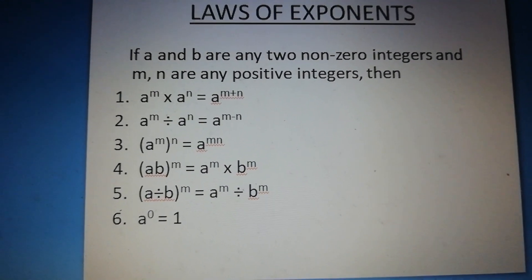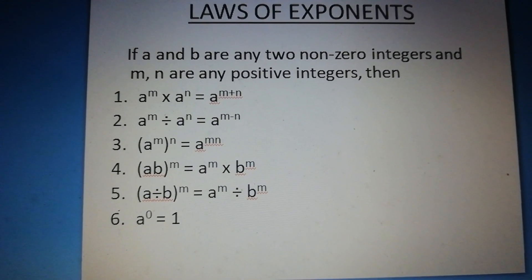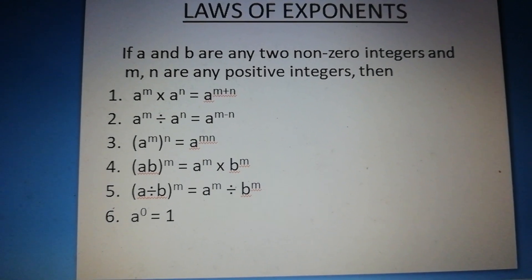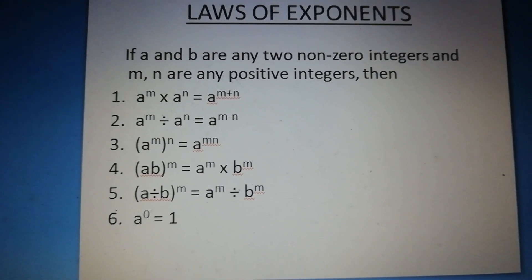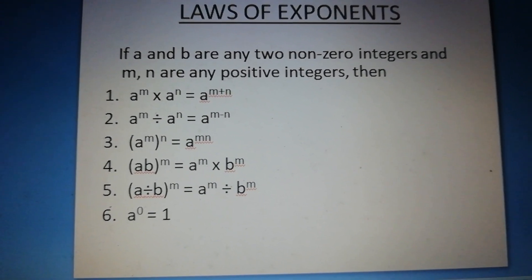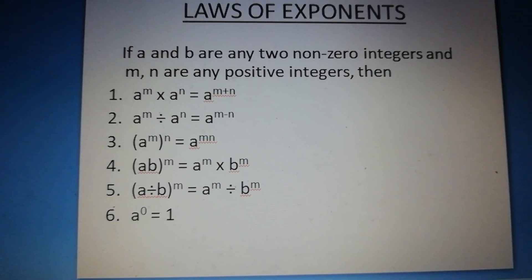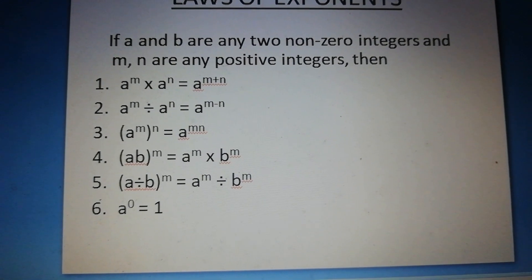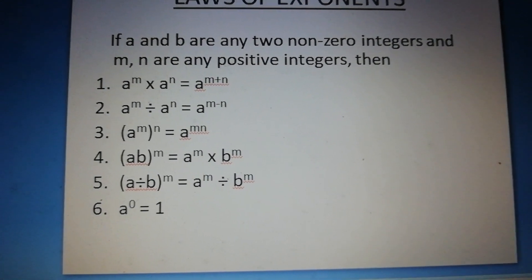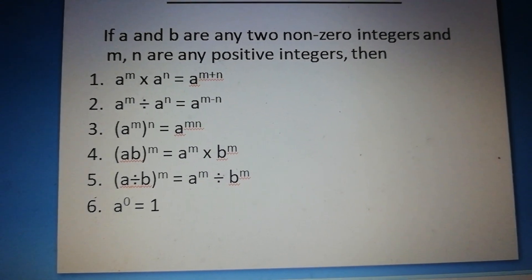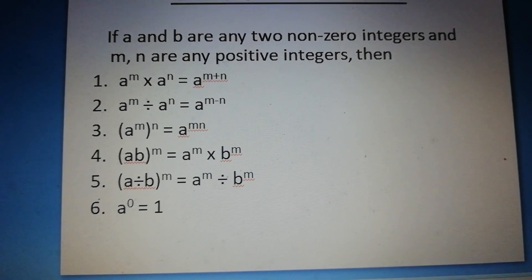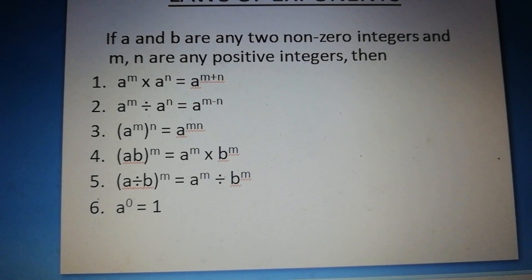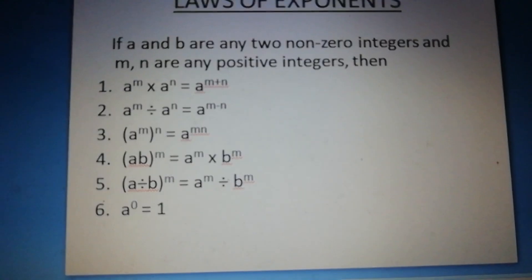Number 3 — a to the power m, whole to the power n, is equal to a to the power m into n. Number 4 — ab whole to the power m is equal to a to the power m into b to the power m. Number 5 — a divided by b whole to the power m is equal to a to the power m divided by b to the power m.